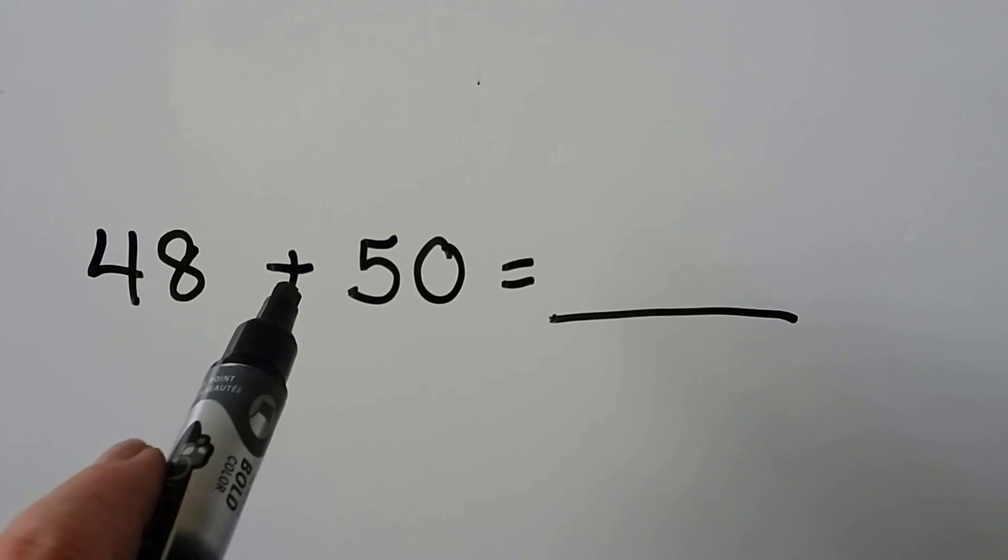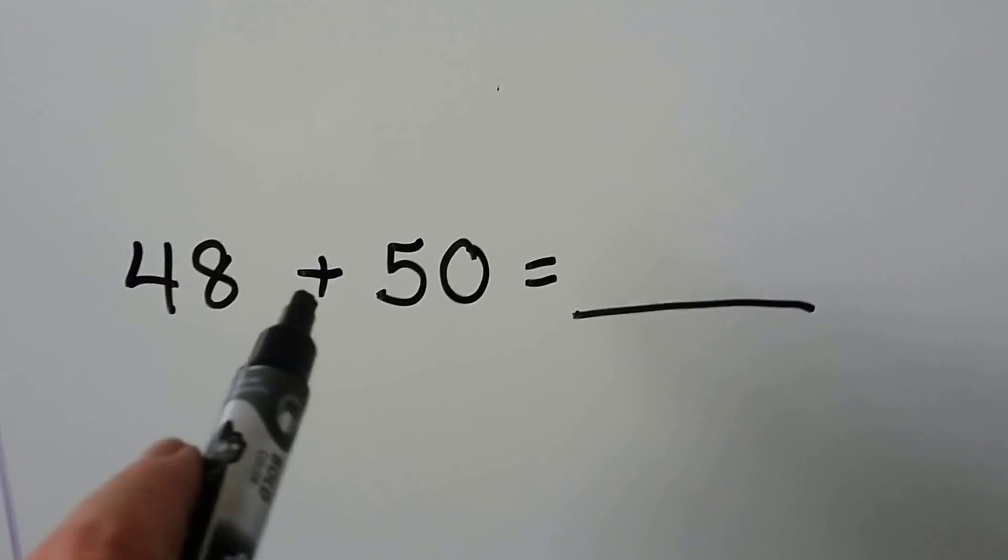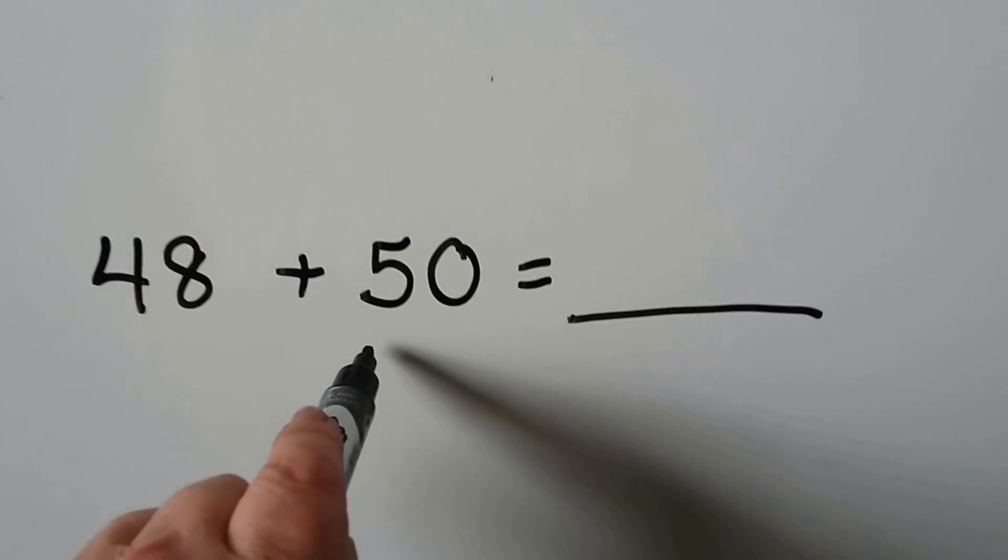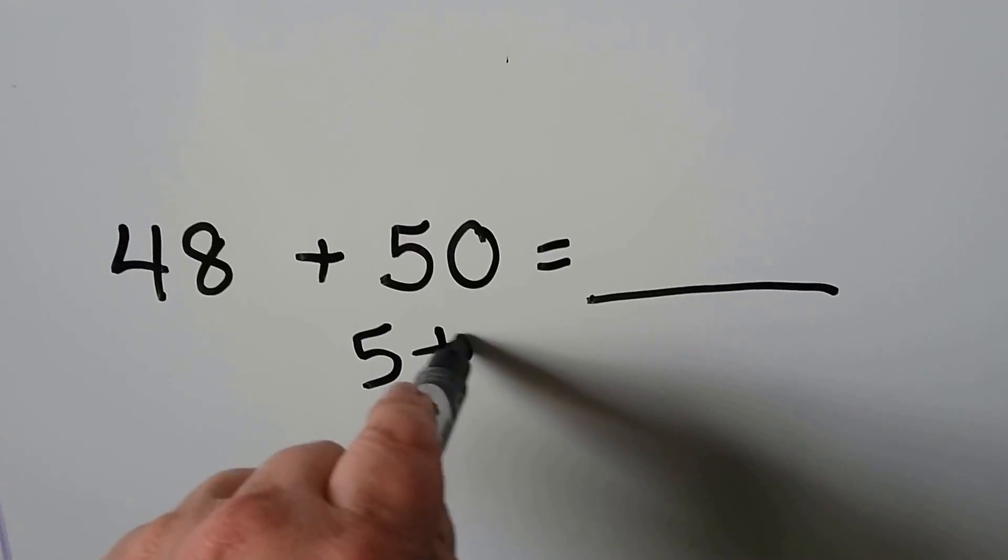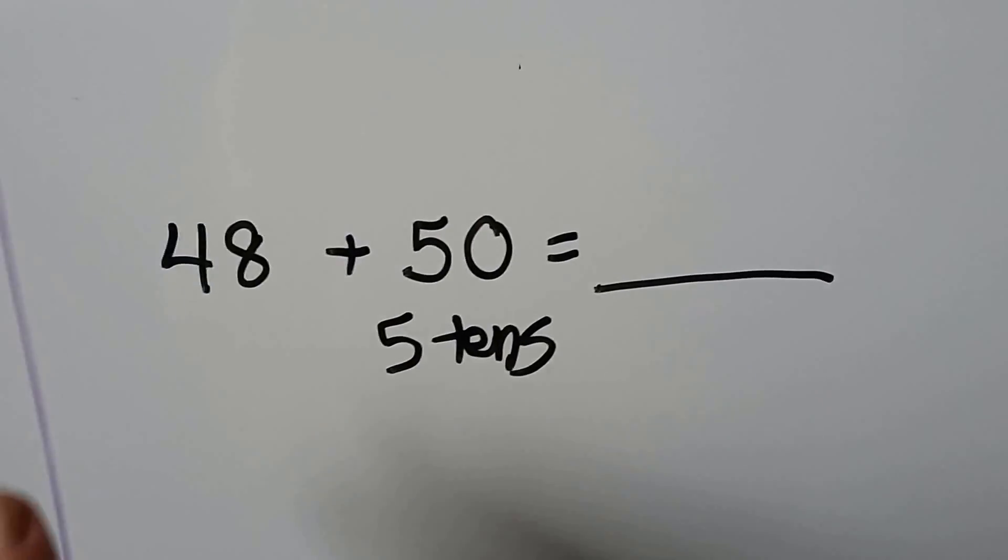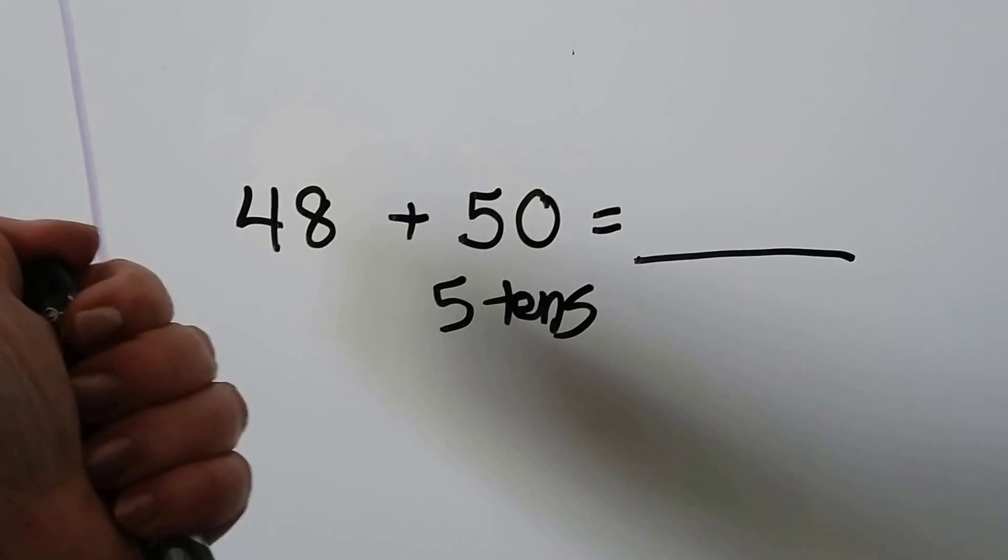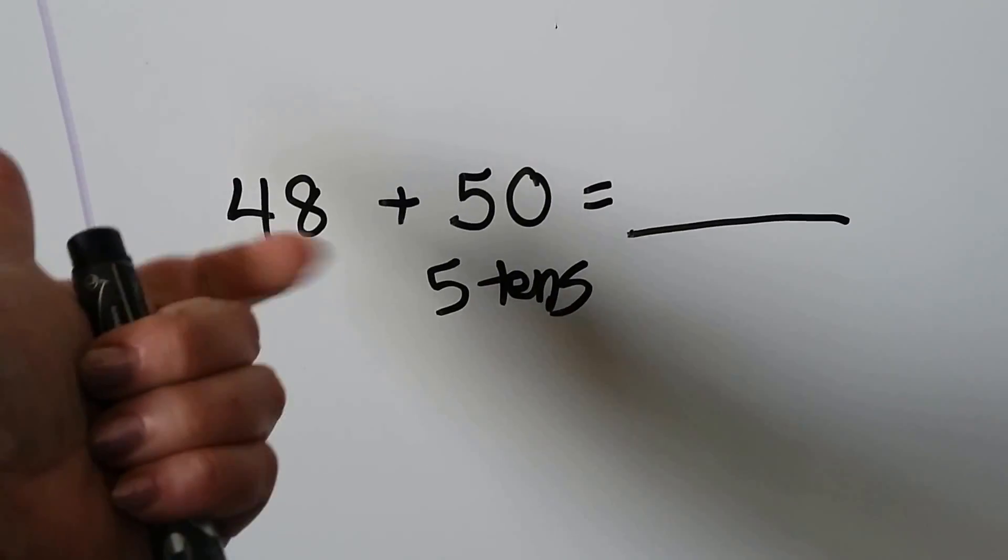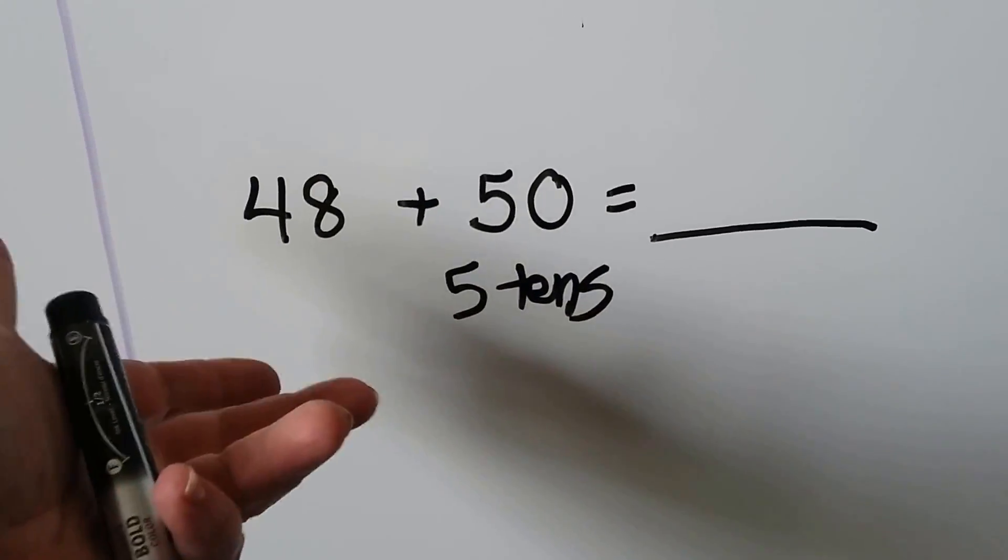Here we have addition. We have 48 and we're going to count on 5 10s. We can start with 48 and count on 5 10s. 48, 58, 68, 78, 88, 98.